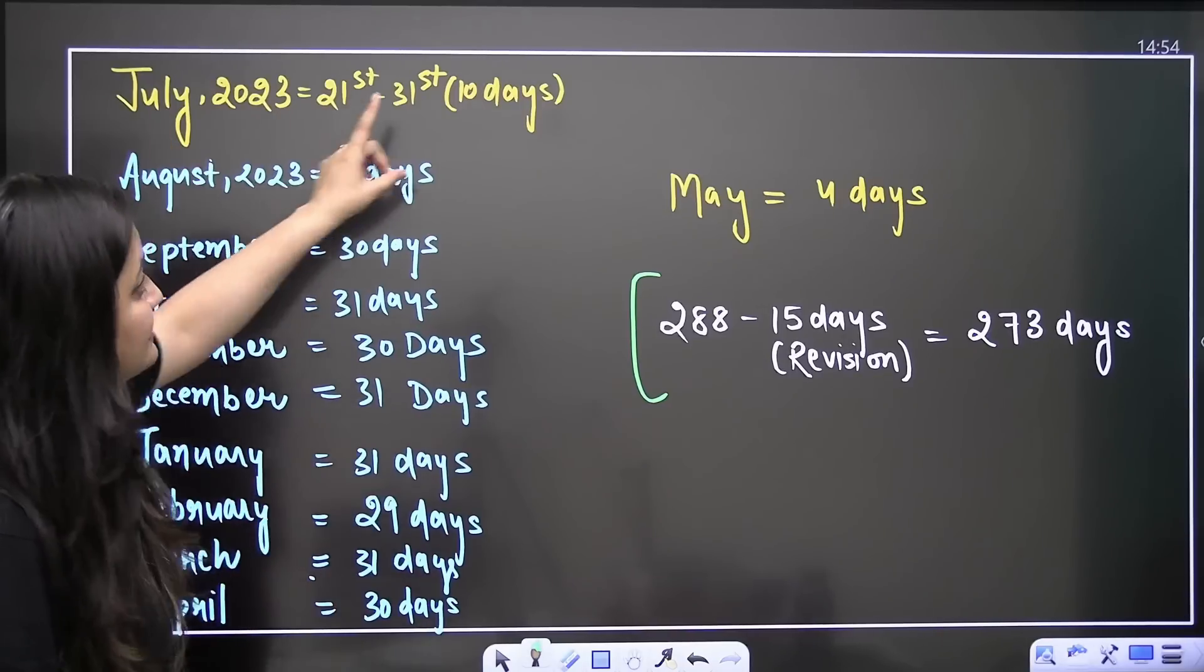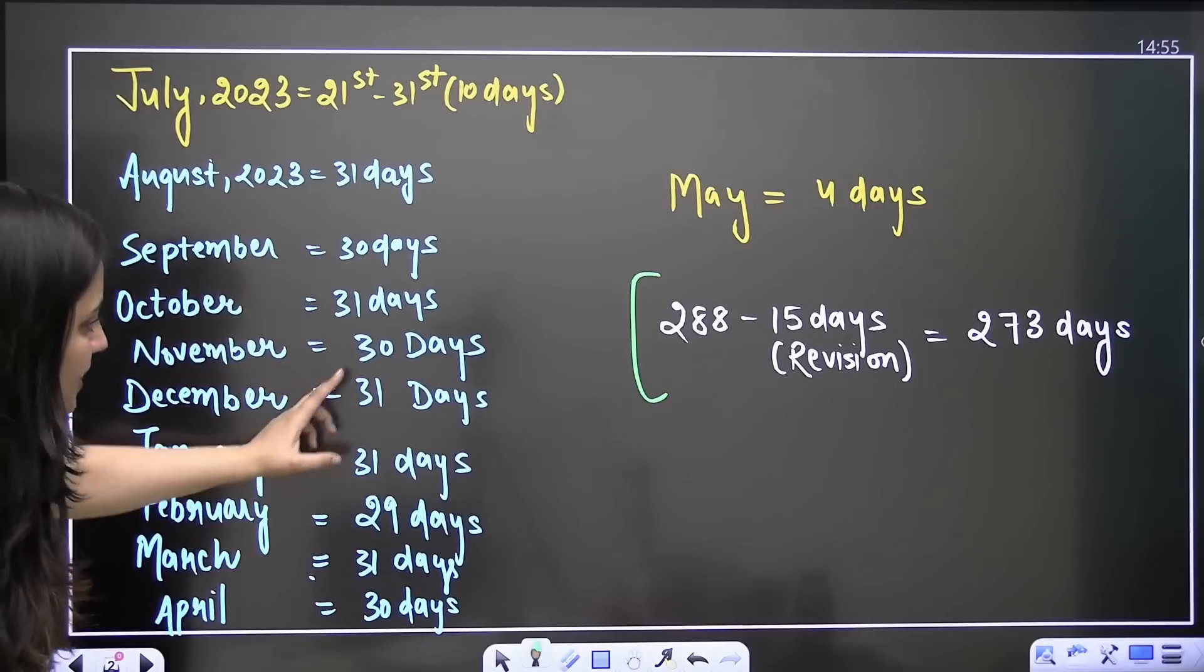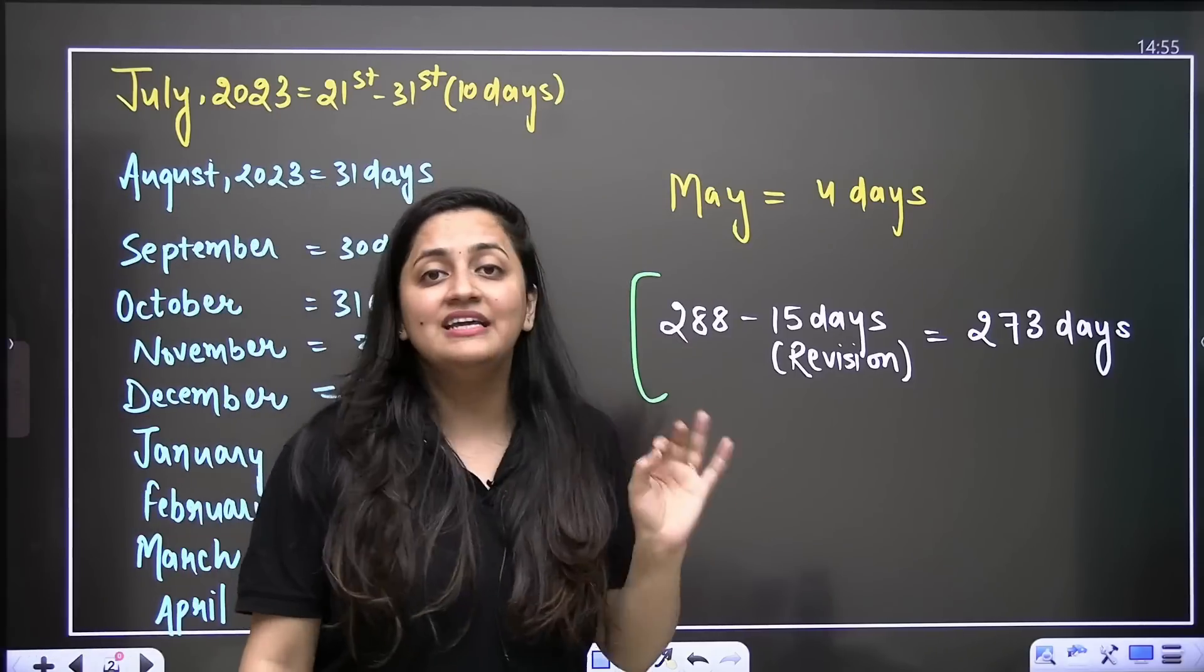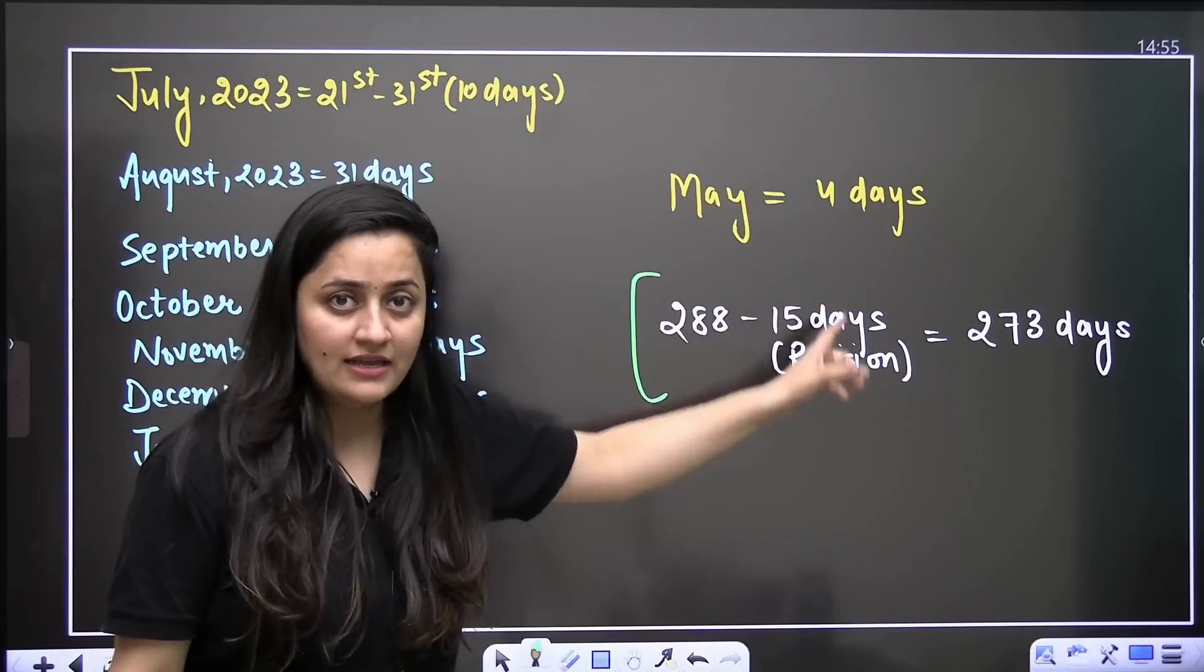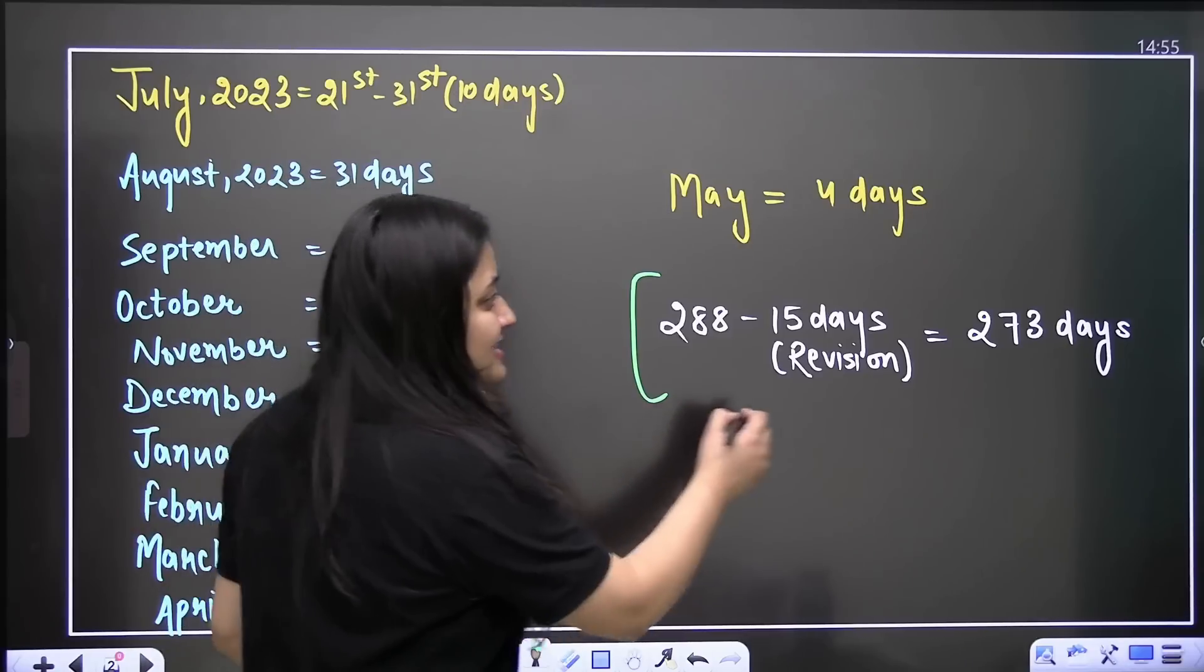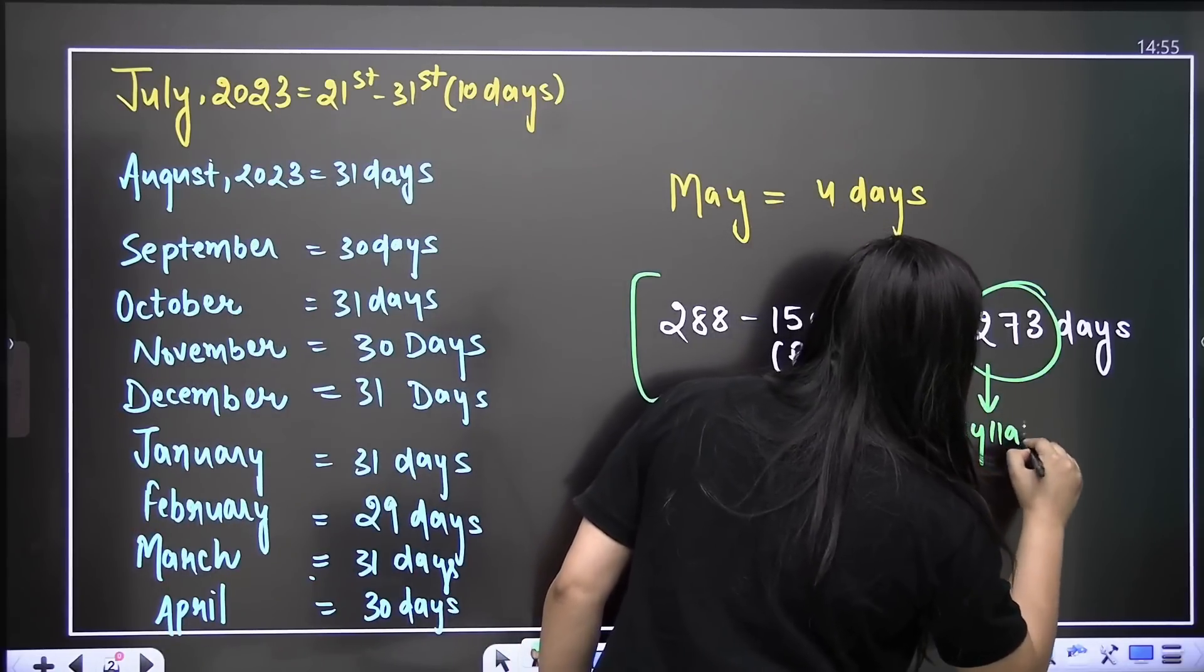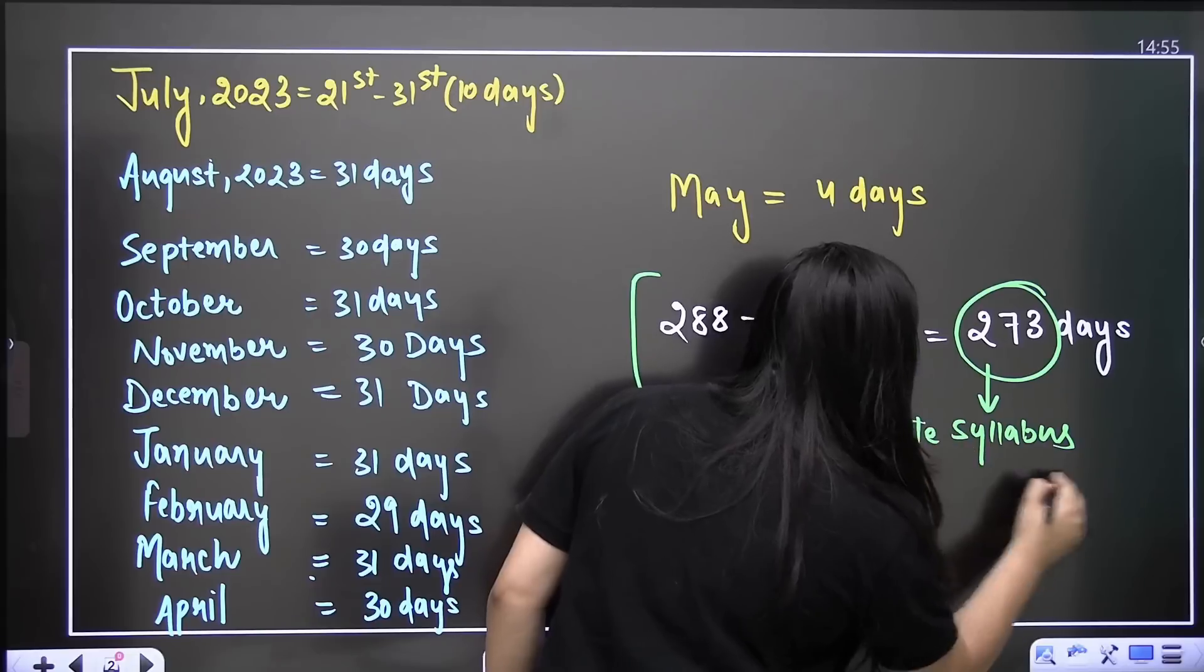So you are left with 273 days. If you start from today, that is 21st of July, you can see that you have 10 days, then August 31, September 30, 31, 31, 31, 29, 31 and 30. So in totality, 273 days are left after subtracting the days for revision. In these 273 days, you have to complete your syllabus.